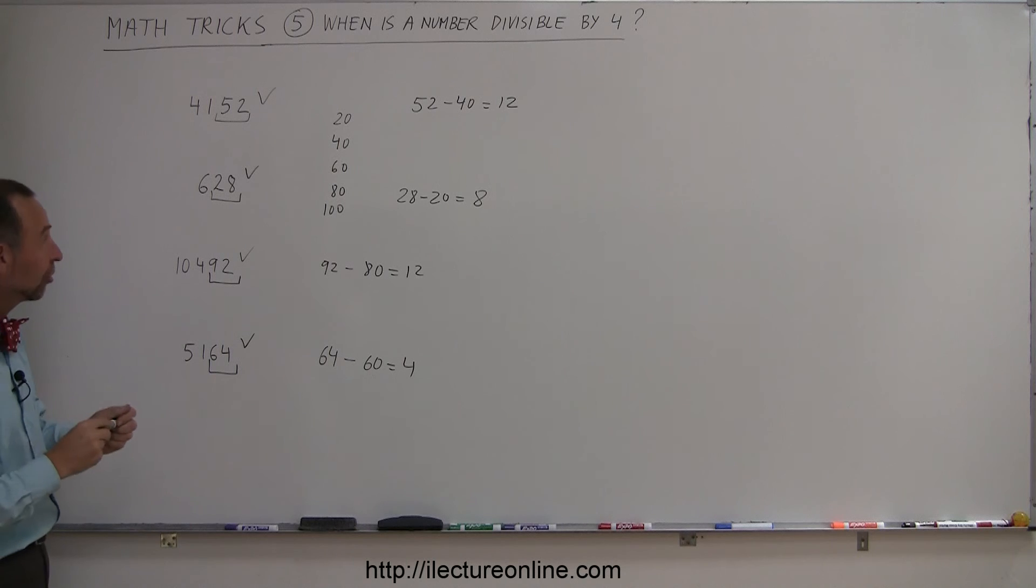So a quick check, just look at the last two digits, subtract the number closest to 20, 40, 60, 80, or 100, the difference, if that's divisible by 4, the number is good to go, you can divide the number by 4, and that's how we do that.